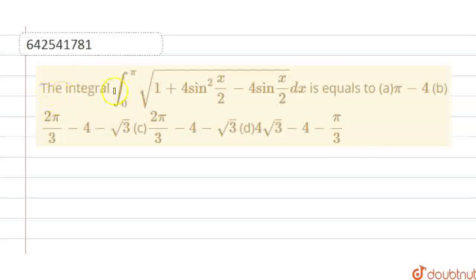In this question, we have to find the value of the integral: integration 0 to π under root (1 + 4 sin²(x/2) - 4 sin(x/2)) dx.